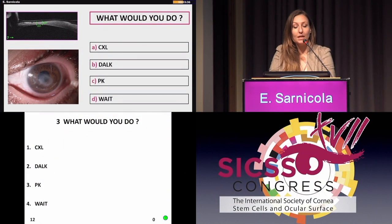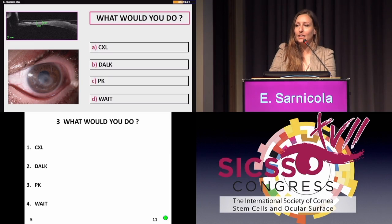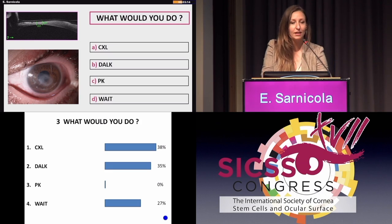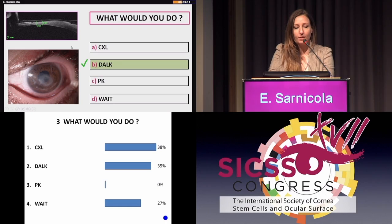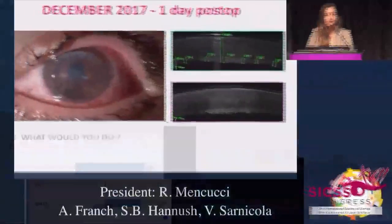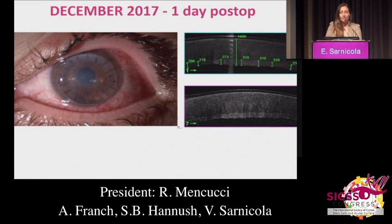So I ask you: what to do in such a case? Options were: cross-linking, DALK, penetrating keratoplasty, or watchful waiting. Most of the audience agreed that no PKP should be performed. We opted for DALK because the cornea was getting thinner and thinner, there was a risk of perforation and endophthalmitis. Sooner or later she would have needed a transplant, so we decided to be as aggressive as possible with an anterior lamellar keratoplasty.